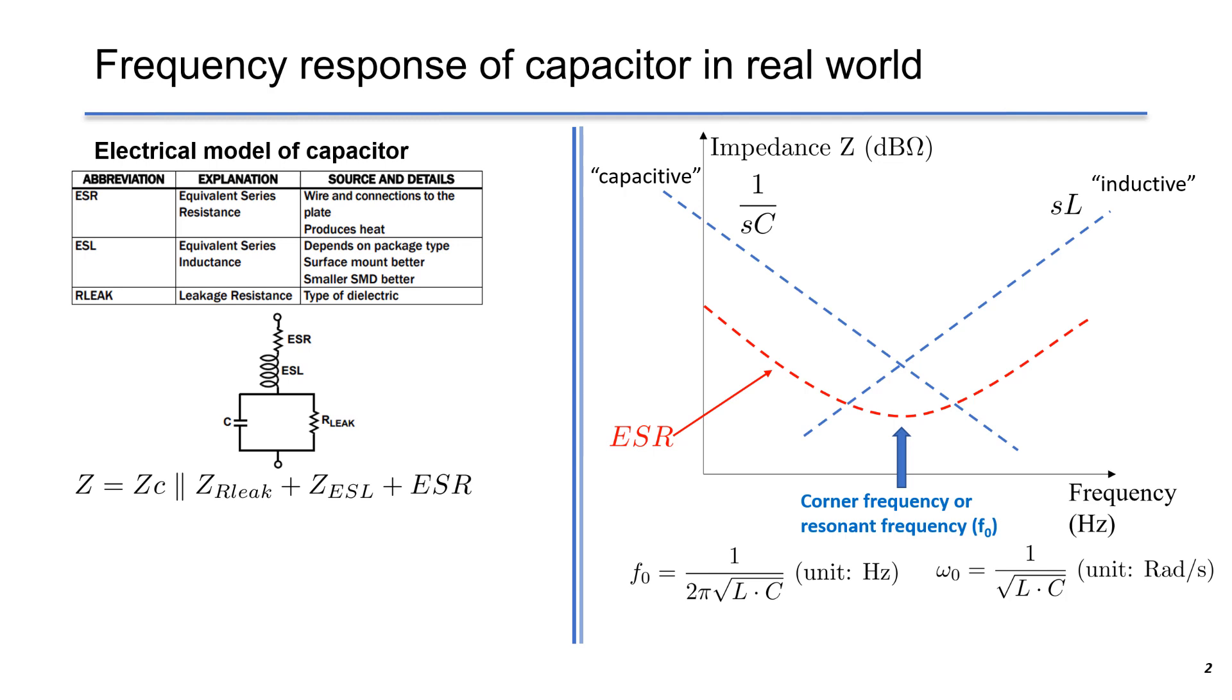This slide shows you a real-world model of a capacitor, including ESR for equivalent series resistor, ESL for equivalent series inductance, and a capacitor in parallel with a leakage resistor. The total impedance Z has three parts in series: capacitor impedance Zc in parallel with leakage resistor, plus impedance of ESL and impedance of ESR.